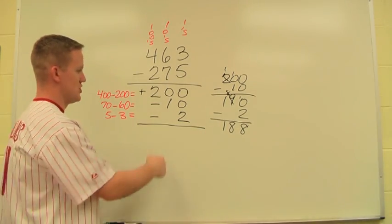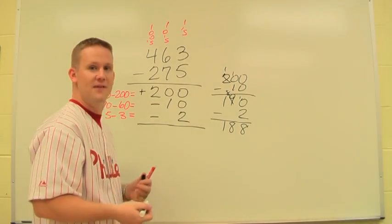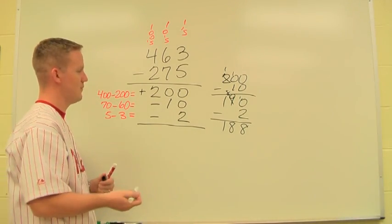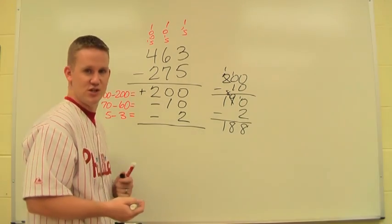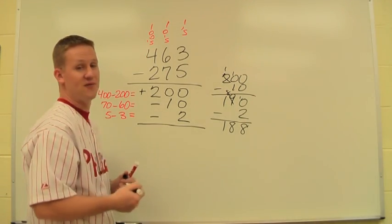Again, we would always encourage them to go back, do it the standard method to check their work. But this is the partial differences method. It simply starts from left to right, and it works by place value, which is what it teaches. Next, we'll try the trade-first method.